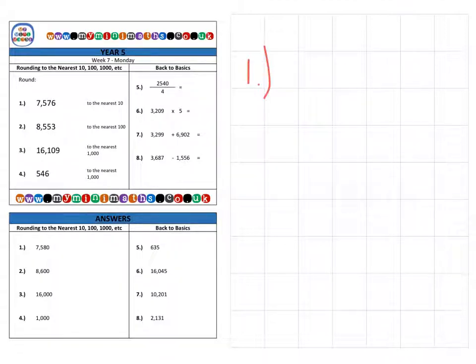And first of all, on to question one, which is 7,576. And we're going to round this to the nearest 10. So the first thing we need to do is we need to have a look at the different columns. So we have our units, our tens, our hundreds and last of all, our thousands.